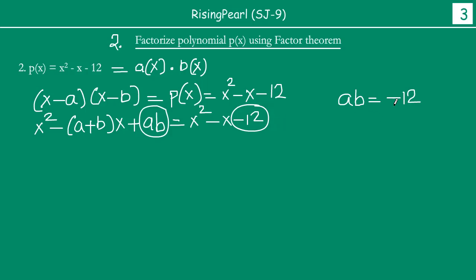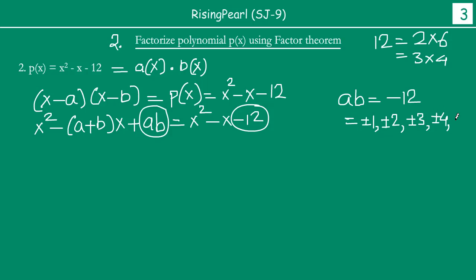Now, ab is equal to minus 12. What are the different factors of minus 12? We can write 12 as 2 times 6, or 3 times 4, and obviously 1 is a factor. So the different factors are plus minus 1, plus minus 2, plus minus 3, plus minus 4, plus minus 6. Compared to the previous example where ab was equal to 15 and we had only 3 factors to consider (6 values with plus/minus), here instead of 3 factors, we have 5 factors, meaning we have to check 10 things.